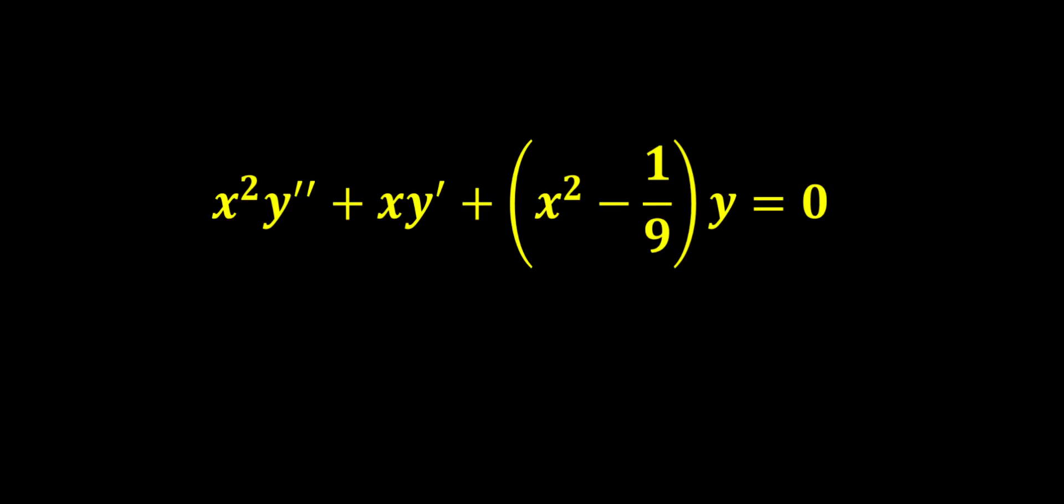In this video we are working with a differential equation: x squared y double prime plus xy prime plus in parentheses x squared minus one ninth times y equals zero.